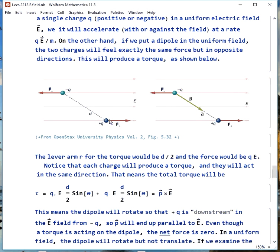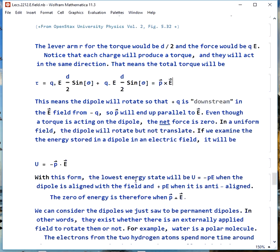The lever arm at the torque would be d over 2, and the force would be qe. So, each charge produces a torque, and they act in the same direction. In this case, this is counterclockwise. The total torque is then q positive in the e field times d over 2 sine of theta, plus q negative in the e field, d over 2 sine of theta. The net result is they combine constructively, and we get p cross e. This means the dipole will rotate so that plus q is downstream in the e field, and minus q is upstream, so p is parallel to e.